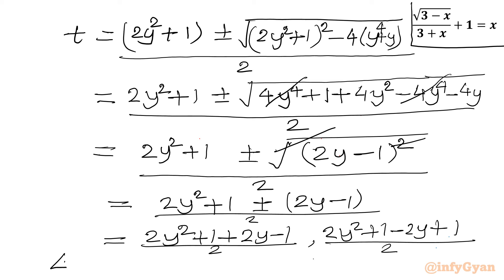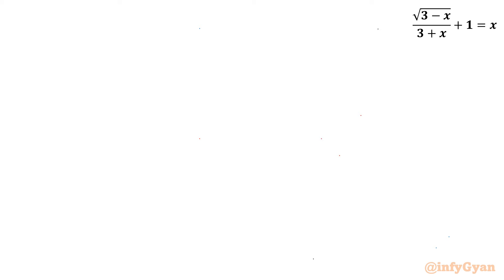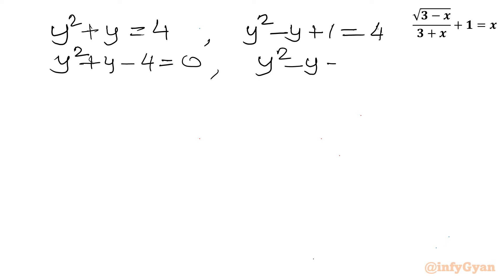Since t equals 4, we now have two quadratic equations in y. First: y squared plus y equals 4, giving y squared plus y minus 4 equals 0. Second: y squared minus y plus 1 equals 4, giving y squared minus y minus 3 equals 0. Applying the quadratic formula to the first: y equals (minus 1 plus or minus square root of (1 plus 16)) divided by 2, giving y equals (negative 1 plus or minus root 17) over 2. For the second: y equals (1 plus or minus square root of (1 plus 12)) divided by 2, giving y equals (1 plus or minus root 13) over 2.